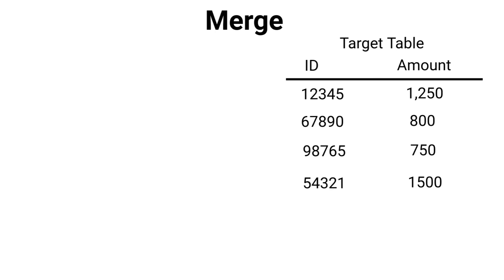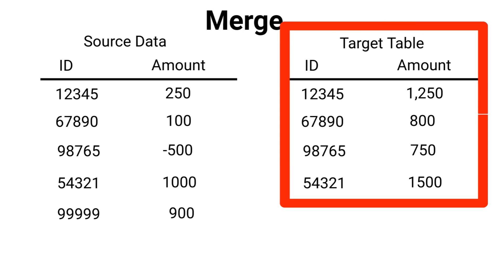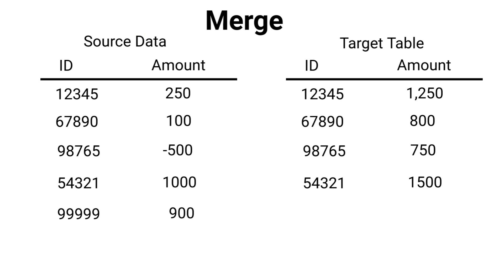Merge. Now merge in SQL is exactly that — you're trying to merge or blend two data sets. You'll typically have a target table, and here we have an example. We'll use ID and some amount — it could be anything, like sales or quantity. And then we'll draw our source data here. The goal is to update our target table based on our source data. Source data can be a table or it can be a query; it doesn't have to be a physical table.